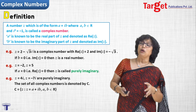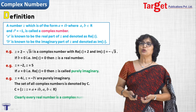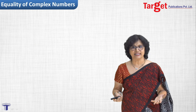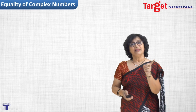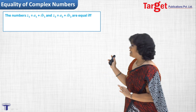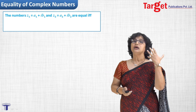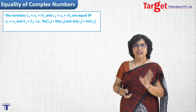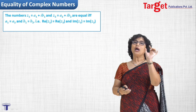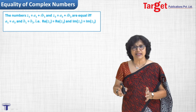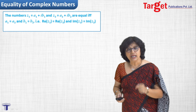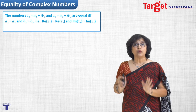Now let us proceed further to the equality of complex numbers. Equality of real numbers was very easy, but equality of complex numbers may look a little more involved. When do we say two complex numbers are equal? If z1 equals a1 plus ib1 and z2 equals a2 plus ib2, then z1 equals z2 if and only if a1 equals a2 and b1 equals b2 — that is, real parts are equal and imaginary parts are equal.